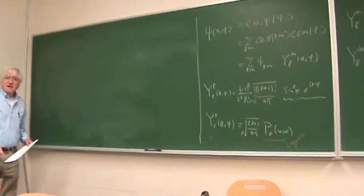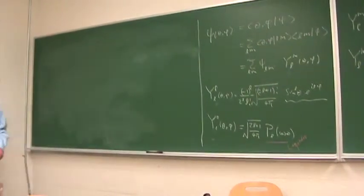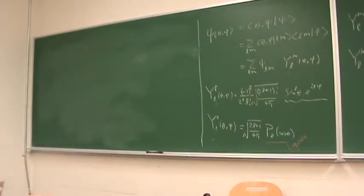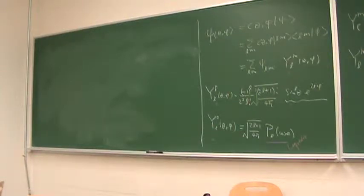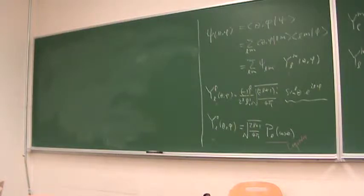I have a question: I've heard in some of the research with neutrinos that they're trying to determine if it's a Majorana or a Dirac particle. And this is related to whether it's its own antiparticle or not. Is there a way to see that here?